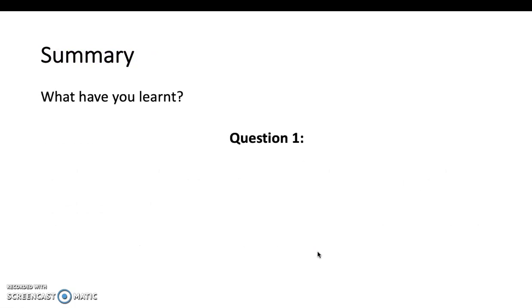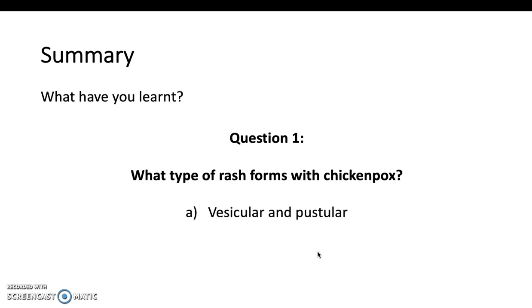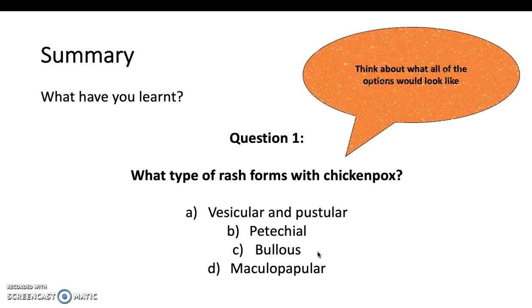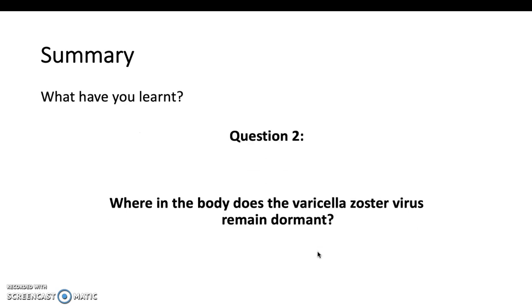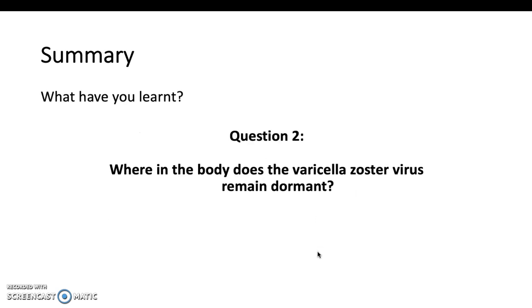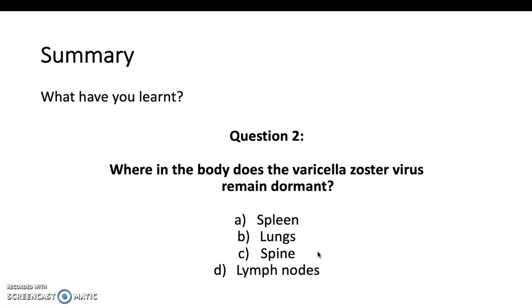In summary, a few recap questions. What type of rash forms with chickenpox? Vesicular and pustular, petechial, bullous, or maculopapular? It's vesicular and pustular. Question two: where in the body does the varicella zoster virus remain dormant? The spleen, lungs, spine, or lymph nodes?